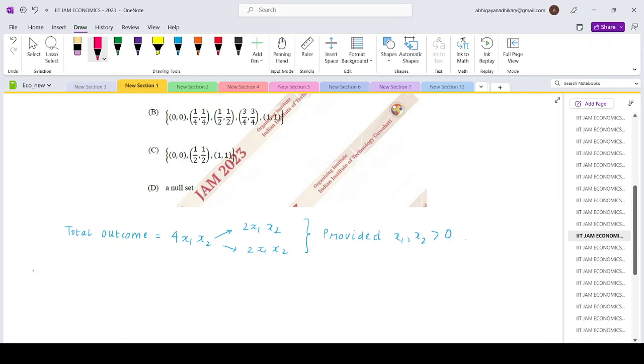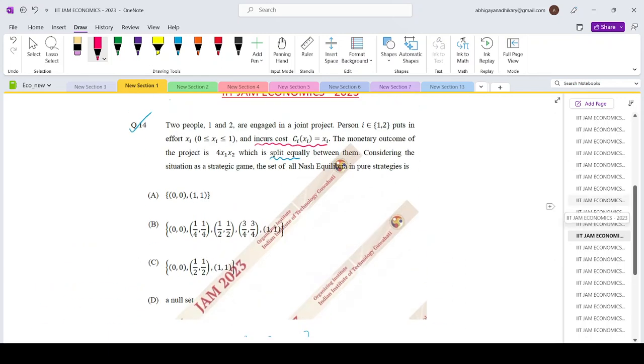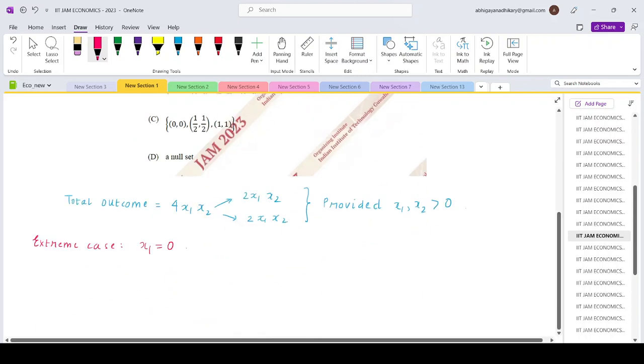So now let us look at the two extreme cases. What if x1 equals 0? Person 1 is putting an effort xi which equals 0. In that case, the total outcome will turn out to be 0 because it's a joint project. So the best response of player 2 would also be to put x2 equals 0. And this is true the other way around as well. So that means (0,0) is a Nash equilibrium.